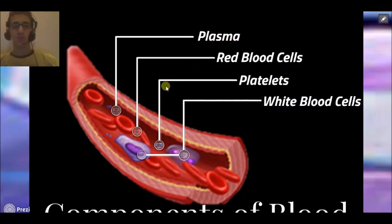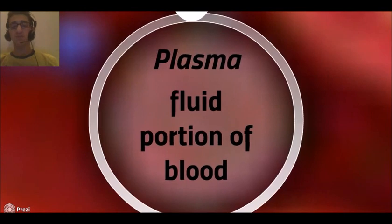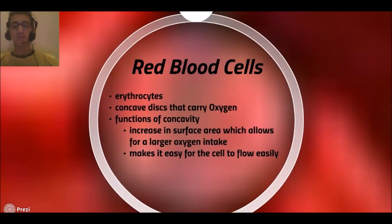The plasma is the liquid portion of the blood. The red blood cells are the ones that carry oxygen, water, and nutrients and have hemoglobin. Red blood cells are erythrocytes — they carry oxygen, and their increased surface area allows for larger oxygen intake and makes it easy for the cell to flow easily.